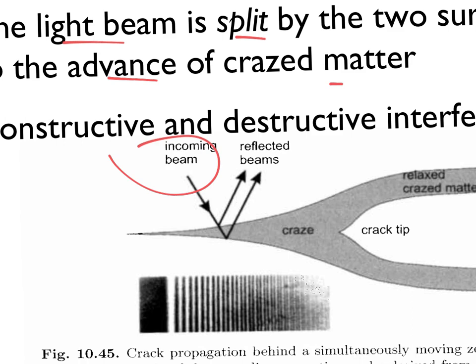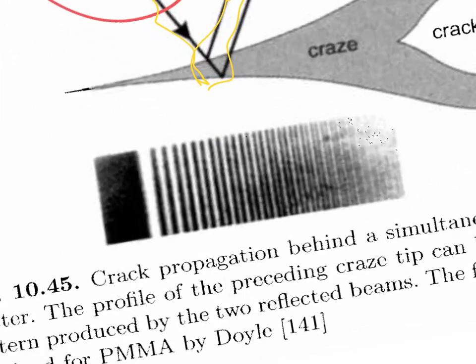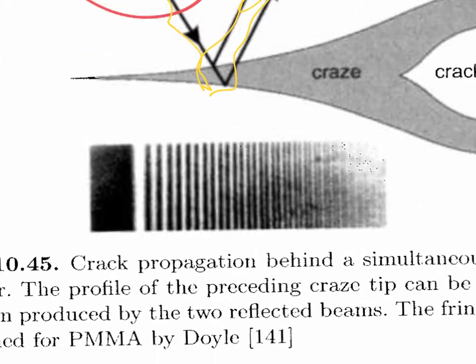We have this light beam coming in and then being reflected out. The amount it is reflected out has to do with where the light is on the surface. You can see there's a slight angle here at the bottom of this craze surface, and that is causing it to shift from a bleak angle to an acute angle, and that gives rise to these types of structures here, which we'll be talking about.